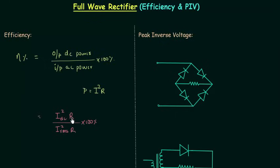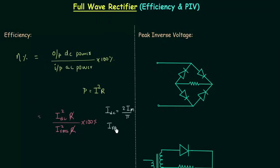This R and this R will cancel out and we are left with IDC squared divided by IRMS squared. IDC, or I average, is equal to twice of IM divided by pi, and IRMS is equal to IM divided by root 2.